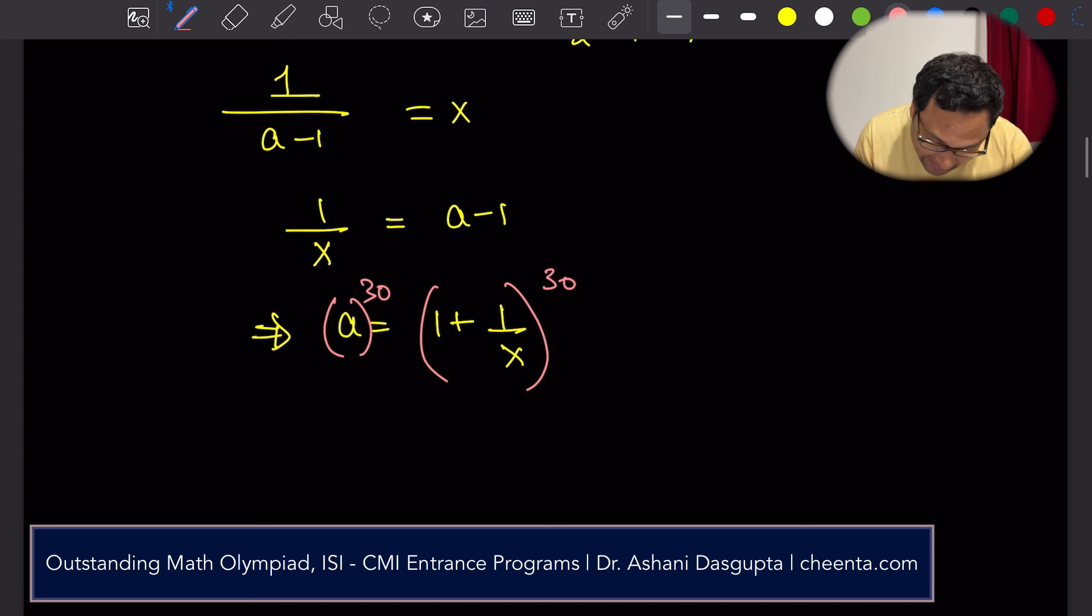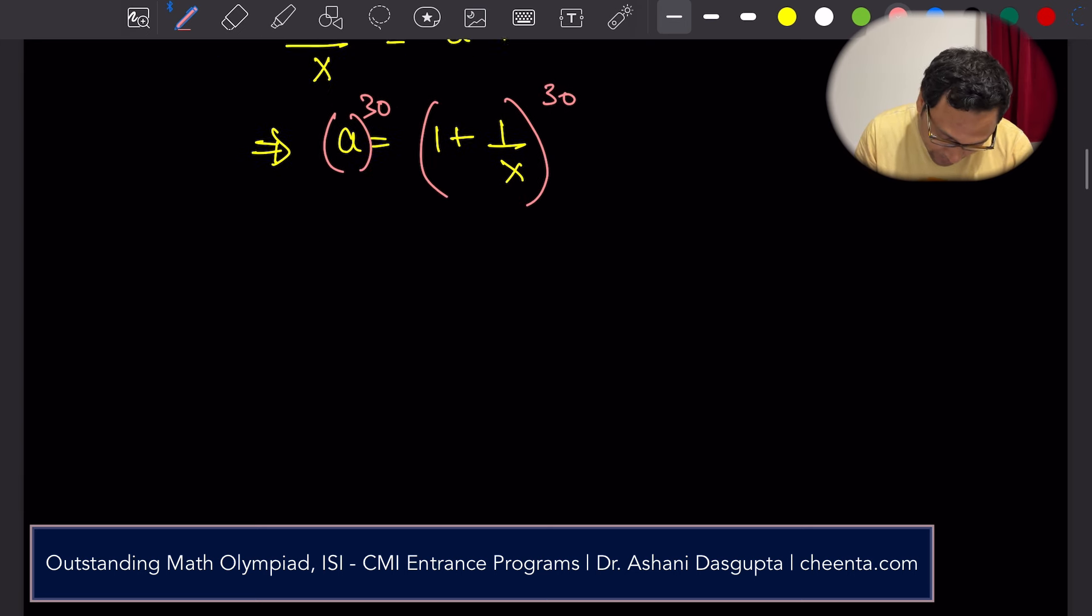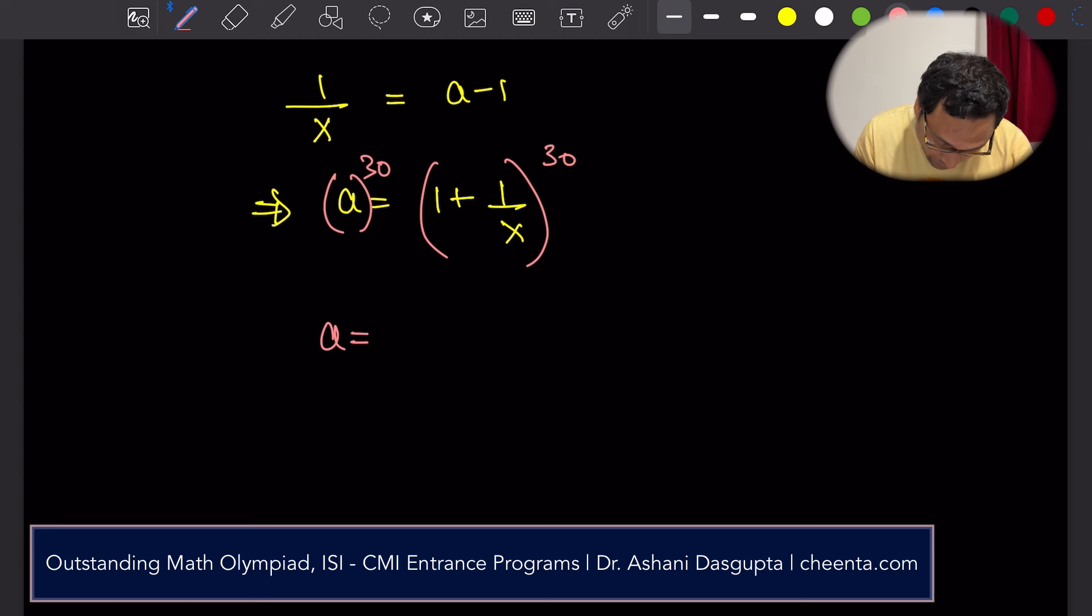Since a is 2 to the power 1 by 5, and we want to find out 1 plus 1 by x to the power 30, which is a to the power 30, it's just one line of calculation. Can you tell me the final answer in the comment section?